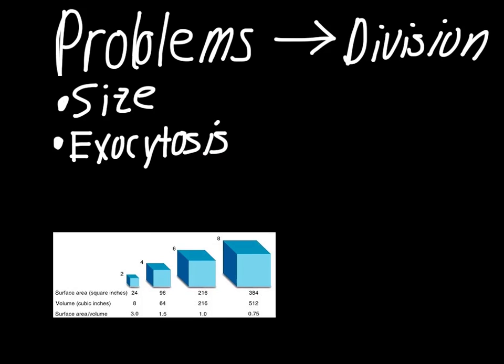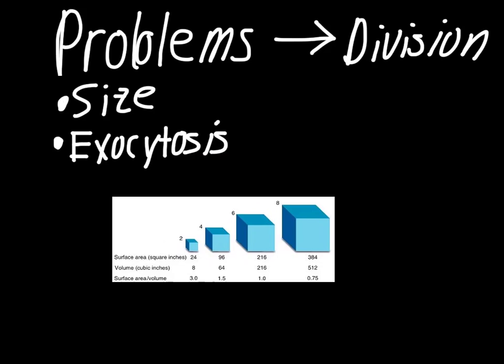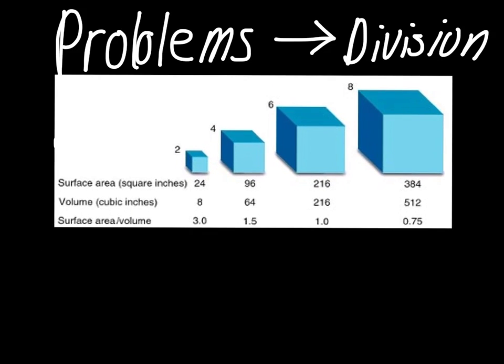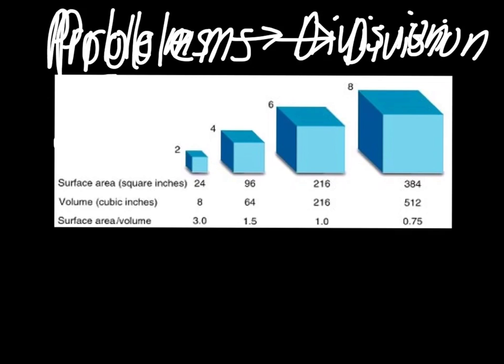So the last thing we have to talk about is this concept called surface-to-volume ratio. If you look at the little cubes on the right, and I promise I'm not going to turn this into a math lesson, but if you look at the little cubes on the right, this one has a side that's two units on each end. So you've got like two here, two here, two here. This one doubles in size up to four. This one gets larger with six on each side. And then finally this one with eight.